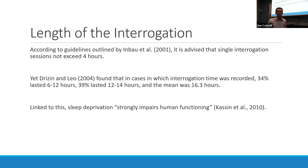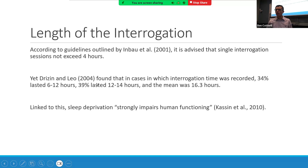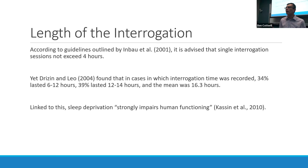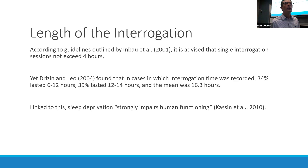The length of the interview is undoubtedly a risk factor. Police interrogations are advised to last no more than four hours, but in false confession cases, 34% lasted between 6 and 12 hours, 39% between 12 and 24 hours, and the average was 16.3 hours. Sleep deprivation from such lengthy interrogations causes impairments in brain functioning — the prefrontal cortex is less active, meaning executive functions are impaired.